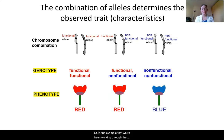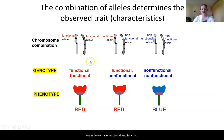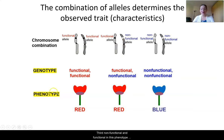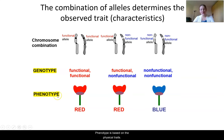In the examples we've worked through, the genotype of the flowers is described by the genes making the proteins: functional and functional in the first example, functional and non-functional in the second, and non-functional and non-functional in the third. The phenotype is the actual color you see. So again: genotype is based on the genes, and phenotype is based on the physical trait.